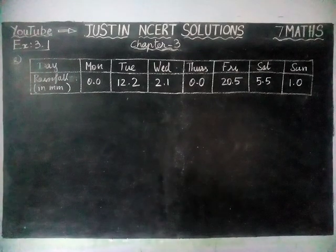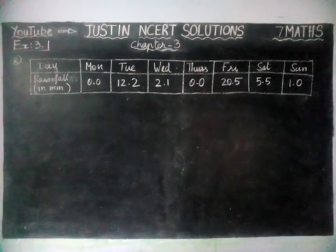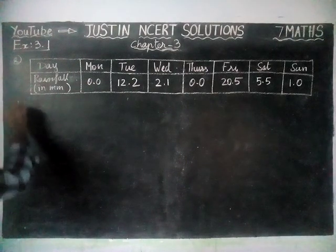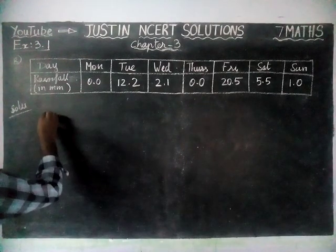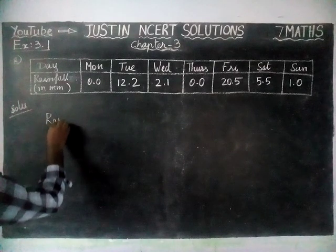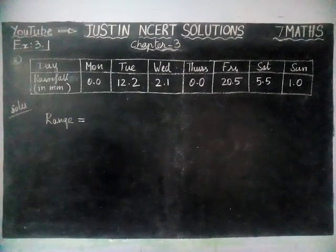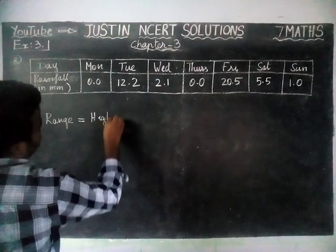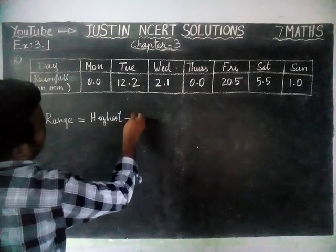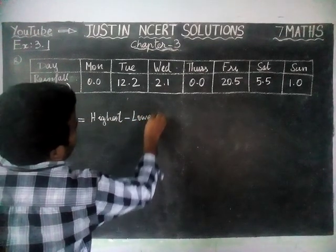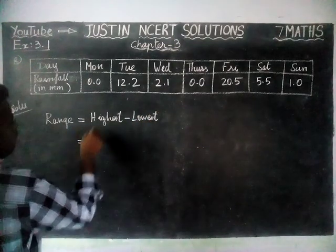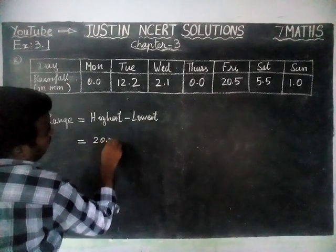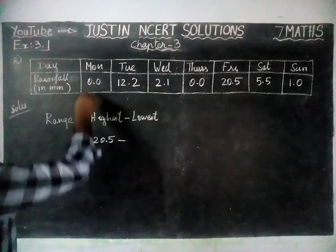First, we are going to find the range of the given data. Range is equal to highest value minus lowest value. The highest rainfall is 20.5 and the lowest rainfall is 0.0.